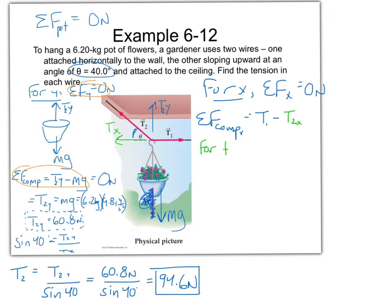For T2x, what do we know? T2 itself equals 94.6 newtons, and we know the angle is 40 degrees. So we can say that the cosine, because T2x is adjacent to that angle, cosine of 40 equals T2x over the hypotenuse T2. So T2 in the x direction is going to have to be equal to T2 cosine 40 degrees.